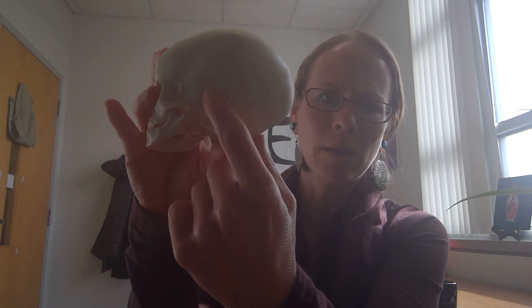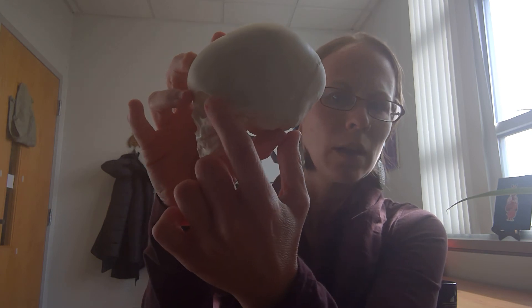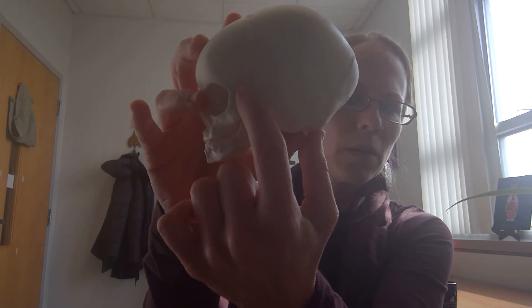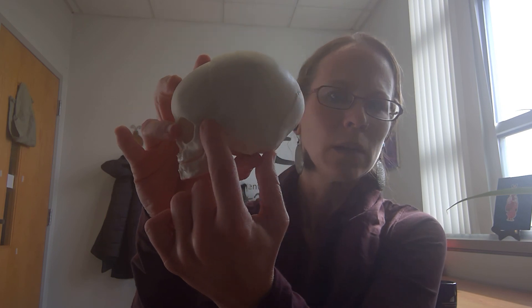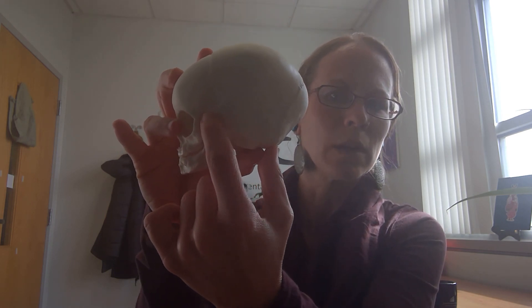So we can get closer. So right in here. So basically that's going to be where you have the parietal, temporal, and occipital bones coming together. And then right here you have the sphenoidal fontanelle.